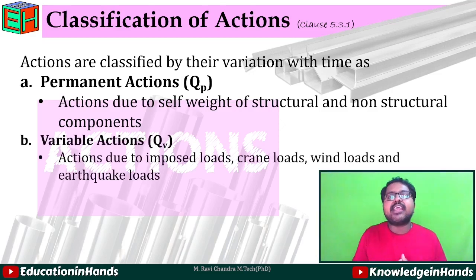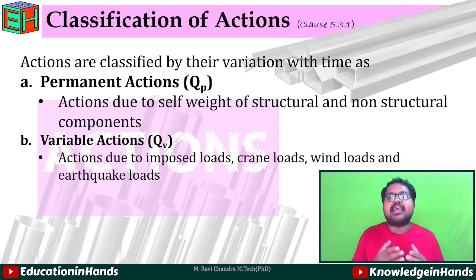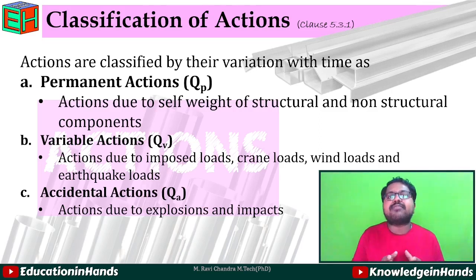The second category is variable actions, denoted by Qv. These are actions due to imposed loads, crane loads, wind loads, and earthquake loads. Permanent actions Qp correspond to dead loads — self-weight of a building or structure. Variable actions correspond to imposed loads or live loads. The third major classification is accidental actions, denoted by Qa, which arise from explosions, impact, or fire.